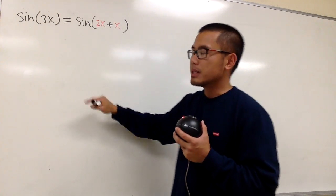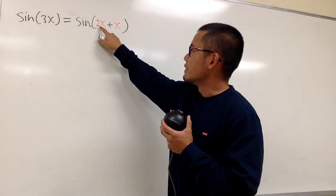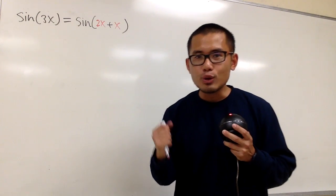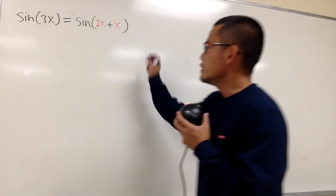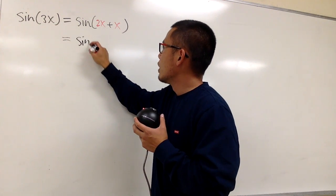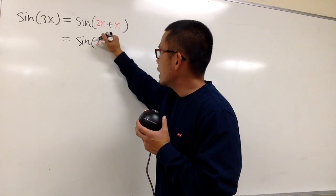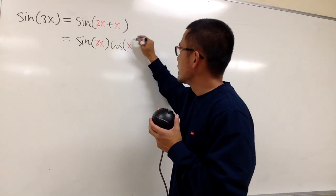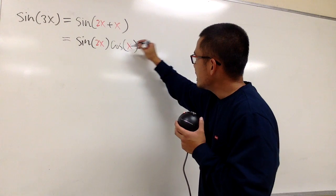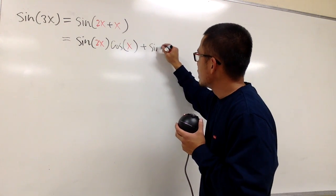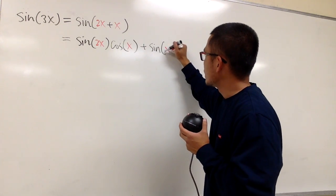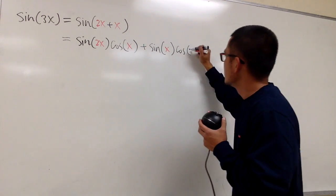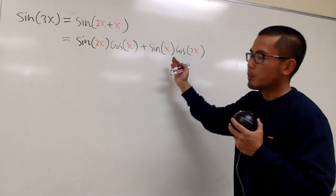The reason I want to do that is because now I have the sum of two things — a first and a second. We can use the angle sum formula for sine: sine of the first, which is 2x, multiplied by cosine of the second, which is x, plus sine of the second, which is x, multiplied by cosine of the first. This is the angle sum formula for sine.